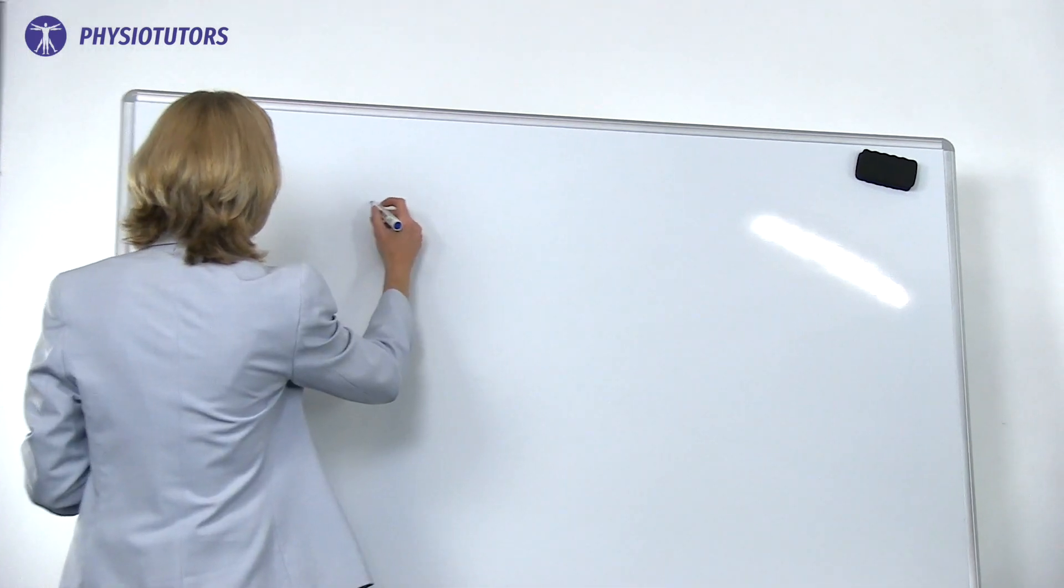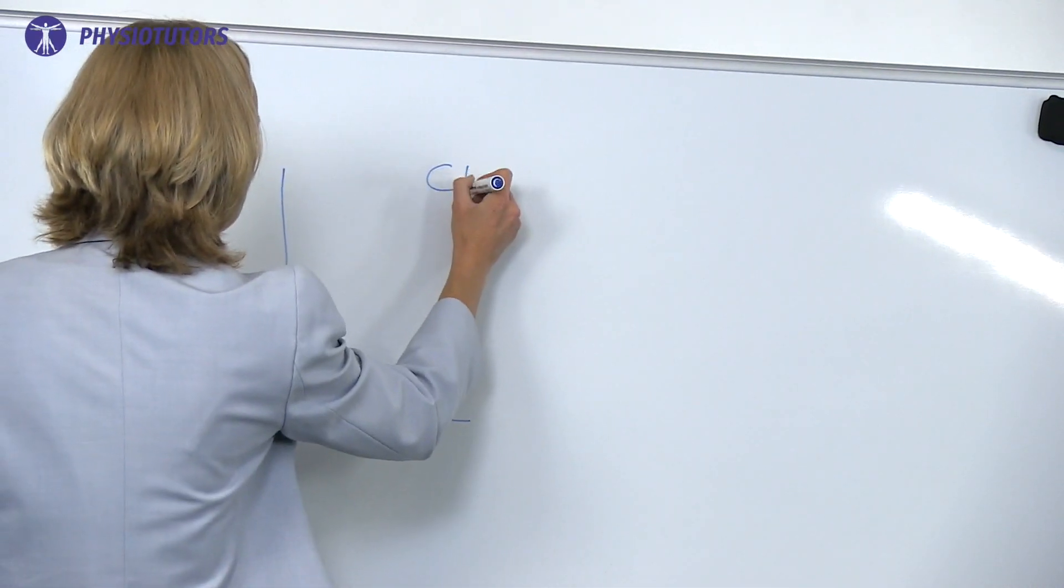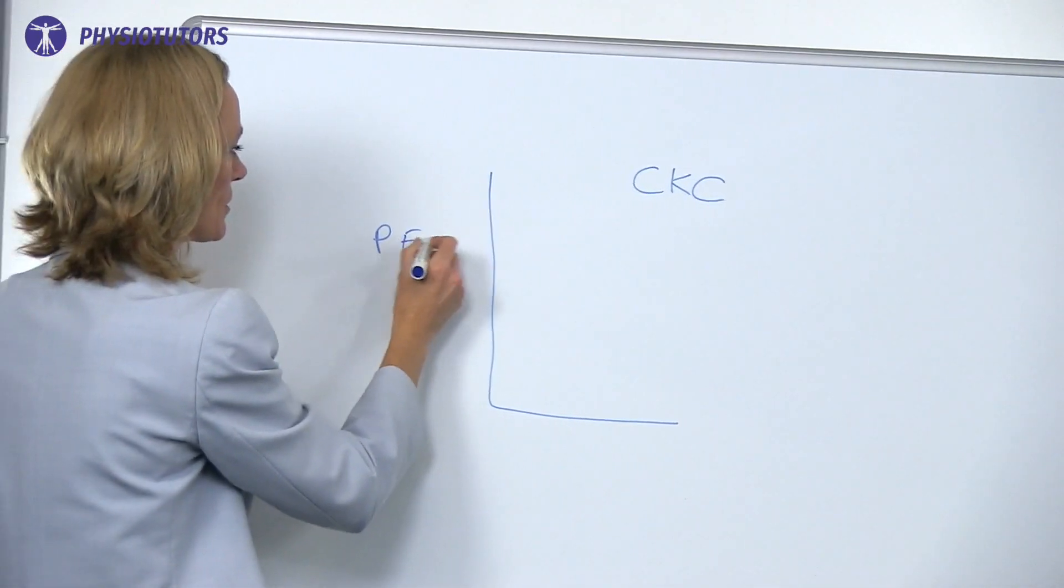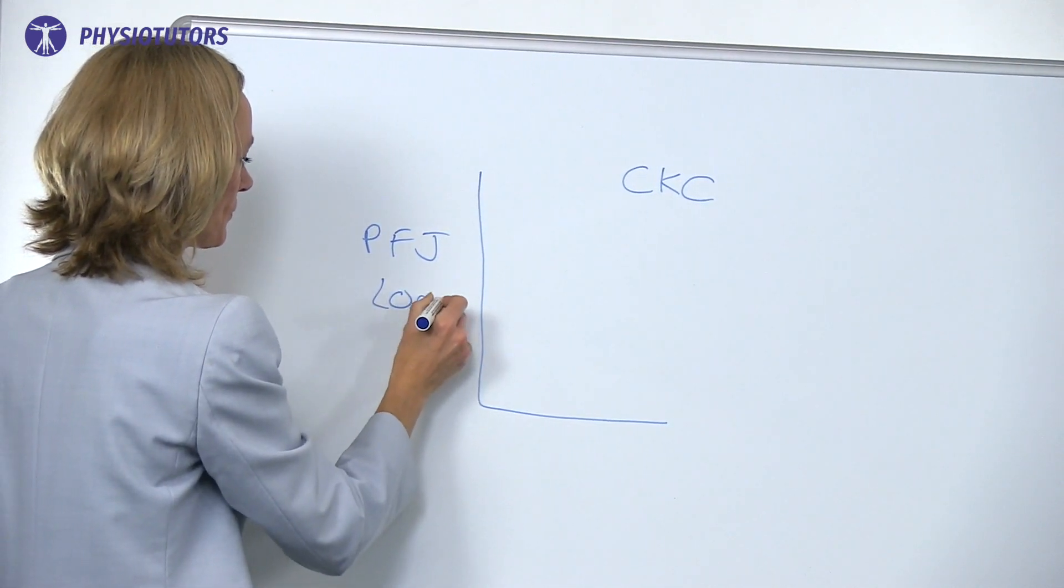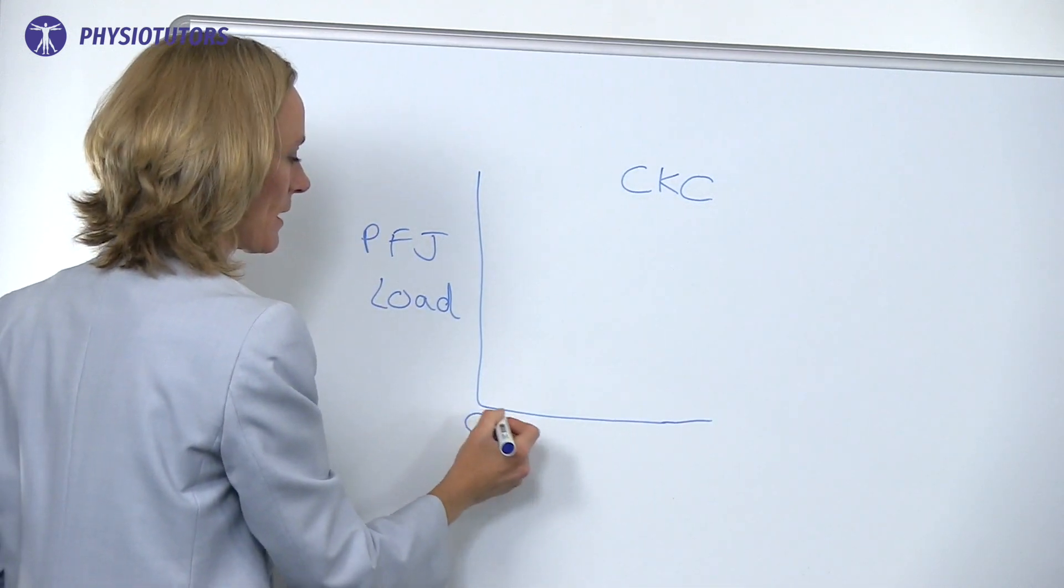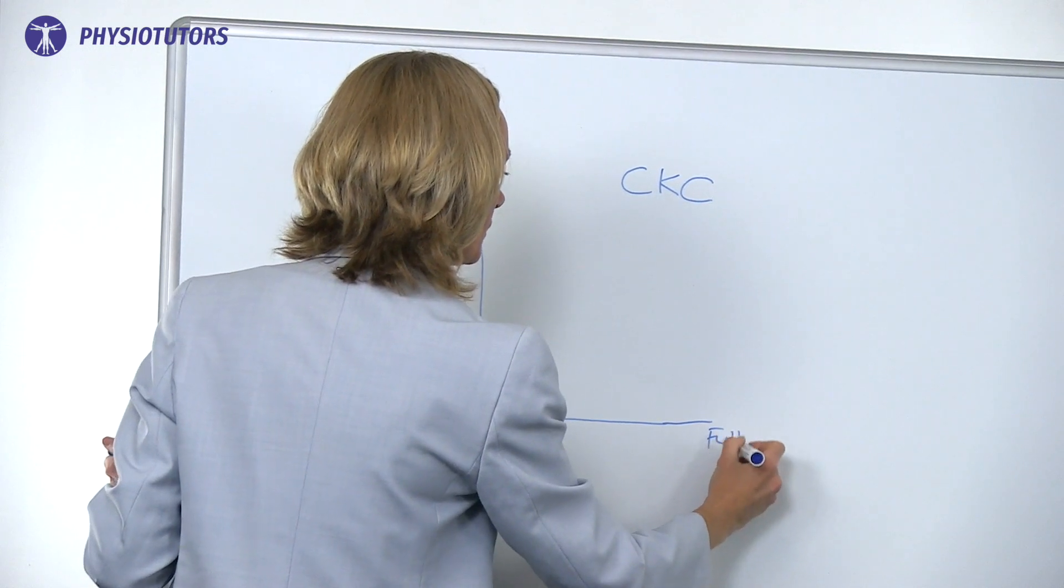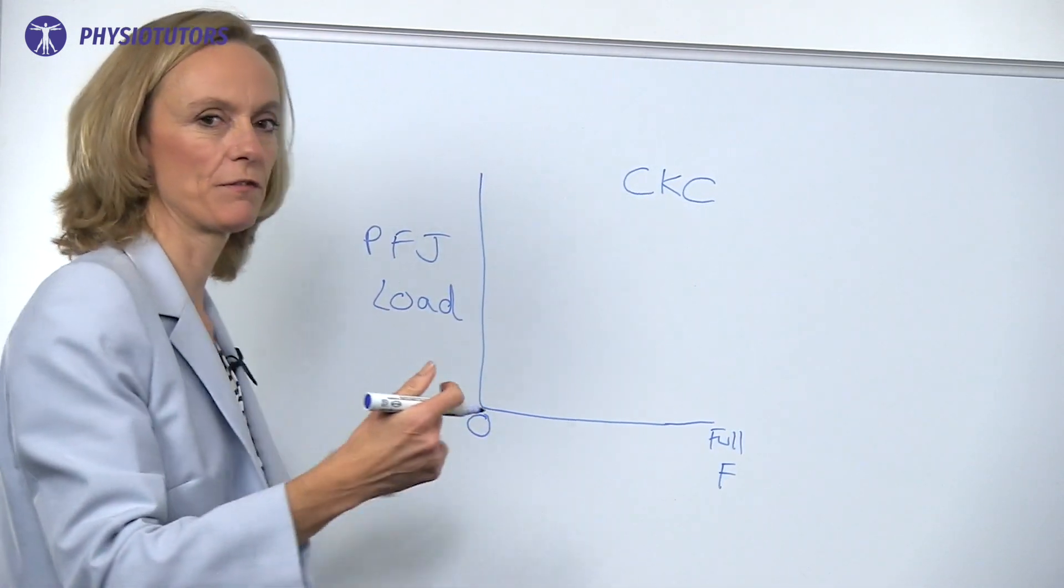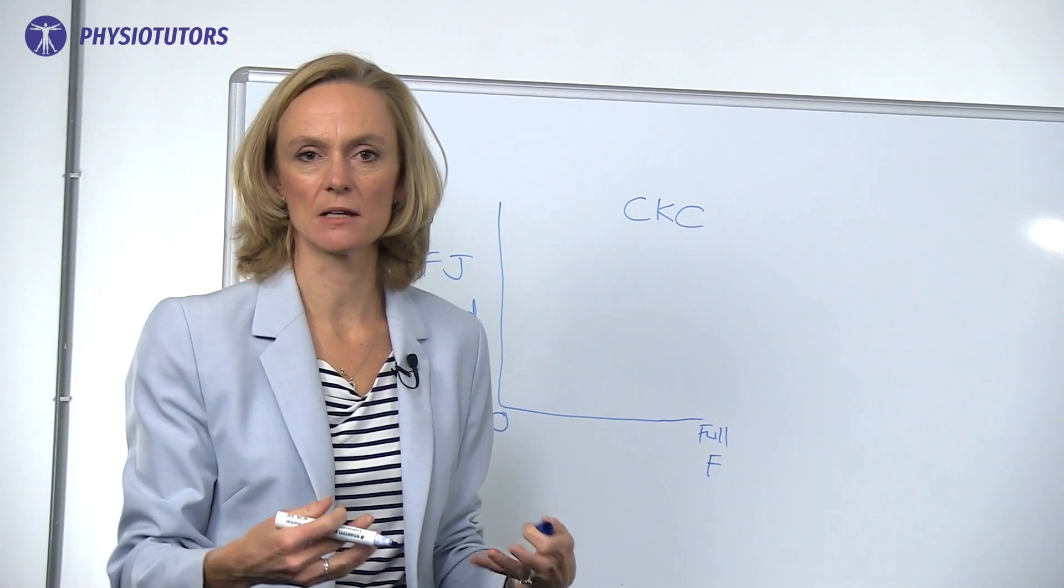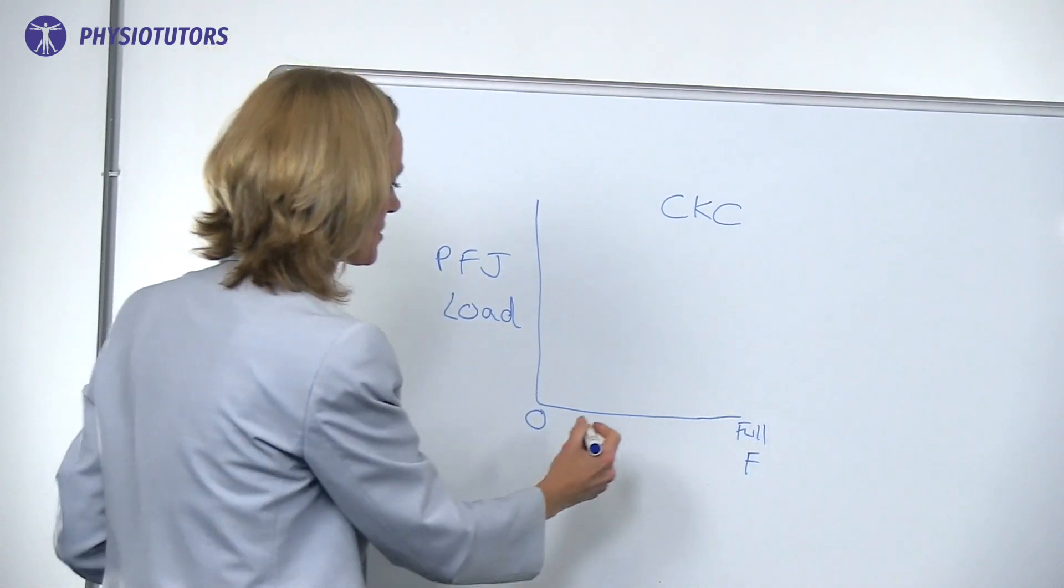So if we draw a graph here, this is for closed kinetic chain, so when the foot is fixed. Here we've got patellofemoral joint load, and here we've got knee angles. Zero is when I'm fully extended, and here is full flexion. Anyone can feel as they go down into a squat that the pressure becomes greater, but what happens at different angles is particularly interesting.